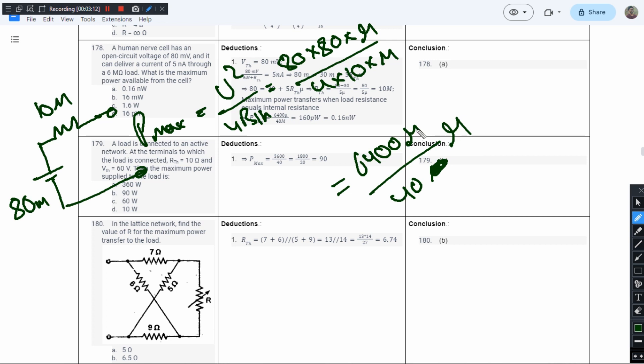mega becomes micro, so micro times micro becomes pico. We have 6400 divided by 40 picowatts, which equals 160 picowatts. Let's observe the options. We have picowatts in option D, but it is 16 picowatts.